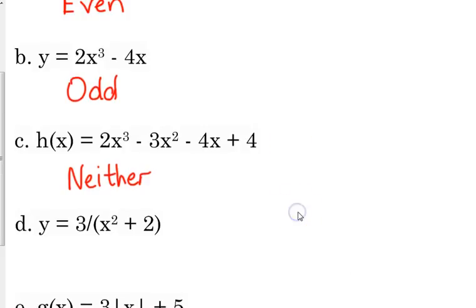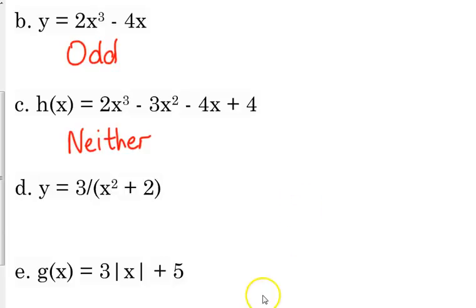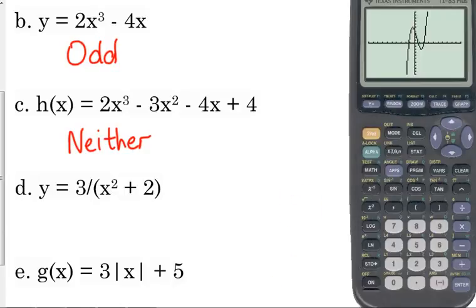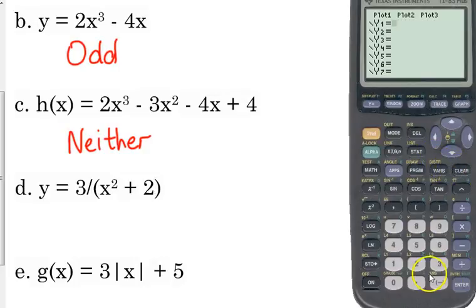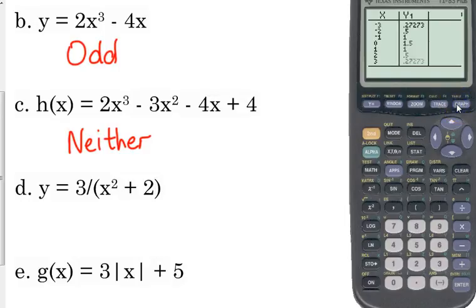Let's look at D. D is a rational function, 3 over x squared plus 2. Make sure you get that x squared plus 2 in parentheses like it is on the paper. Most of the time if you're dealing with a rational function, it's not going to have the parentheses built in.